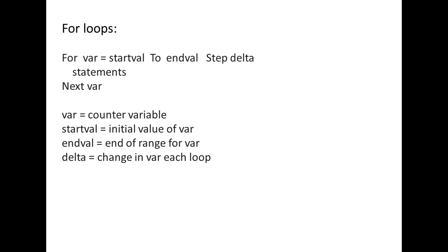A for loop begins with the for statement, followed by the name of a variable whose value will change by an amount delta each time the statements in the loop are executed. Initially, this variable, which is called var here, is assigned the value of startVal. StartVal and endVal determine the range of values var must stay within for the loop to proceed.